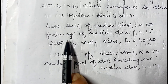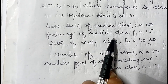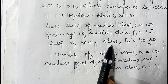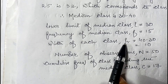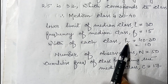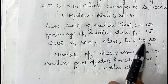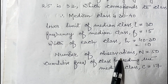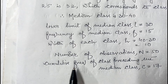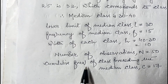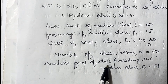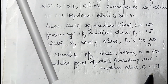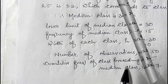To summarize the values: lower limit of the median class l is 30, frequency of the median class f is 15, width of each class h is 10, number of observations n is 50, and cumulative frequency of the class preceding the median class c is 17. We will use these values in the median formula.